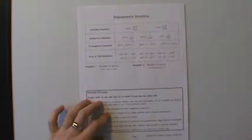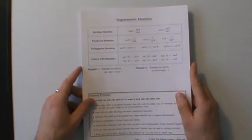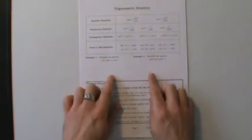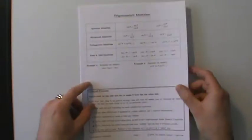In this video we're going to start talking about trig identities. For these examples we're going to be using a packet. If you want a copy to follow along with, check the video description — there's a link in there. In this video we're going to do two simple examples and talk about the process in general. After that, each example is going to have its own video.